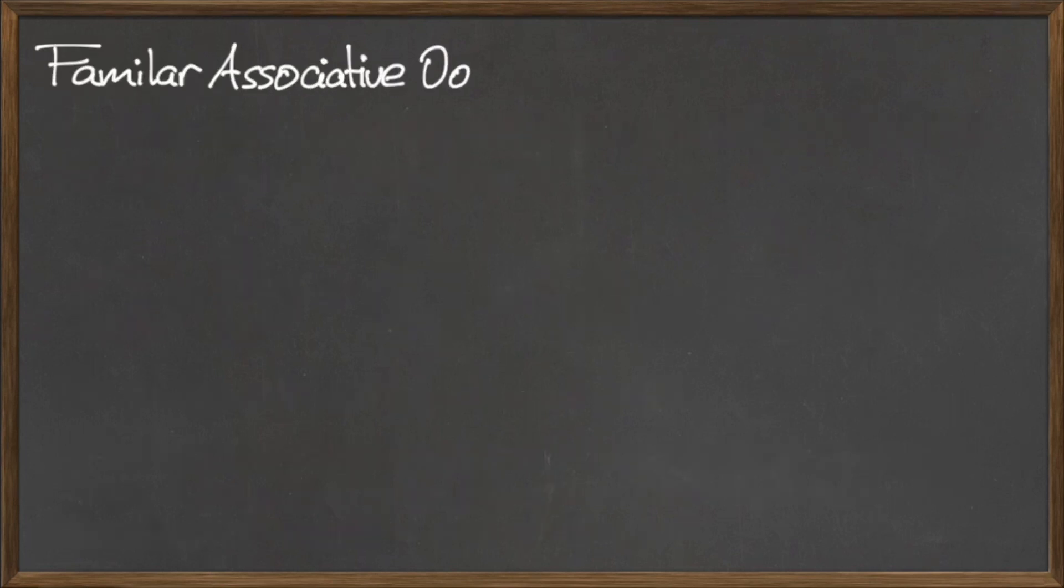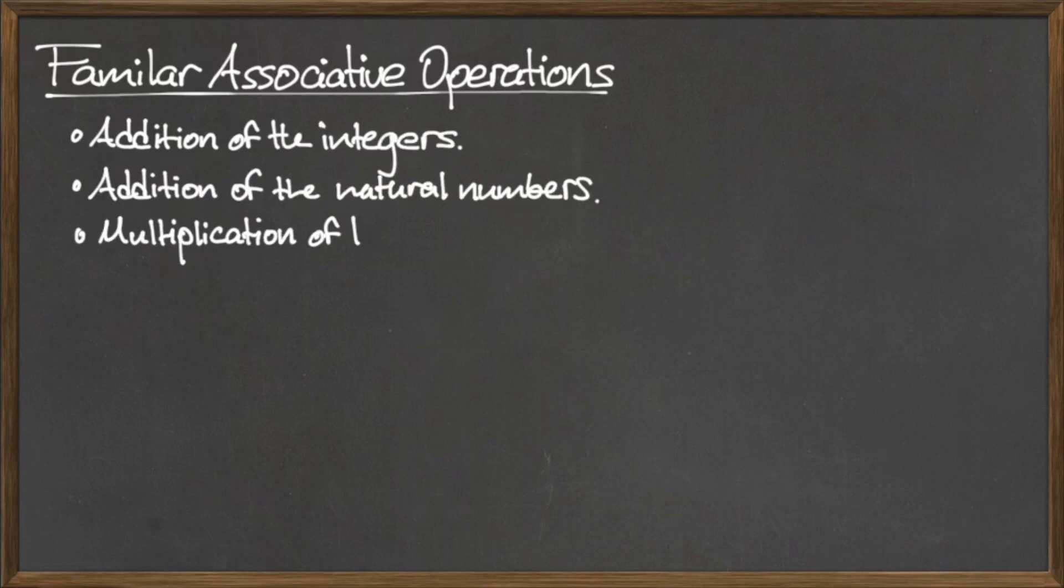Some familiar associative binary operations are the addition and multiplication of integers and natural numbers.